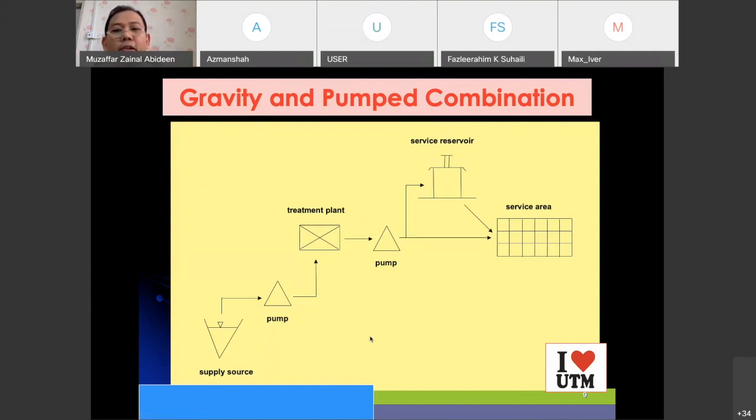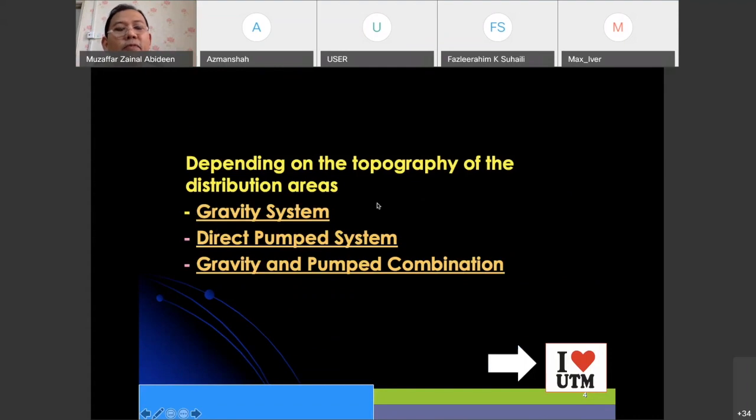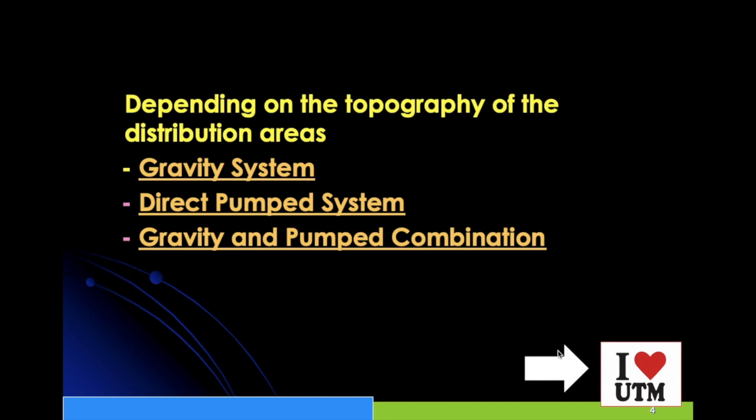Not very many areas are lucky to have a gravity system where they don't need a pump and water flows naturally due to gravity. Most probably, most of us have a direct pump system. But in order to improve the direct pump system, we combine gravity and pumps. The gravity part is provided by the storage reservoir, and the pump system is provided by the pump directly from the water treatment plant.